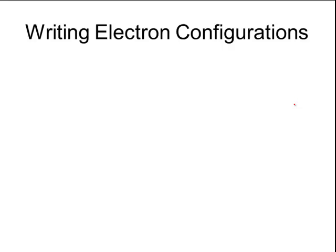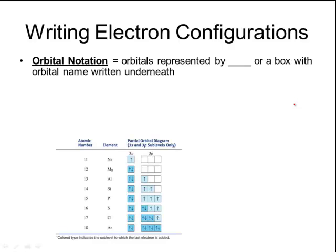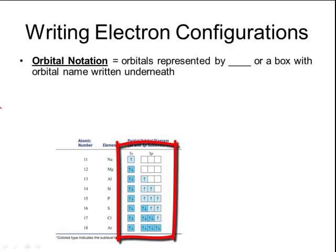So finally, we can use each of these three rules to write electron configurations. There are three different ways to write electron configurations. The first is called an orbital notation. Generally throughout this whole screencast, the orbital notations have been the pictures that have either dashes or boxes to represent the orbital name. And then normally you'll see the orbital name written either underneath or on top of those boxes. You can see in the picture at the bottom that these are just partial orbital diagrams, but you can see the 3s boxes and the 3p boxes to represent those orbitals.